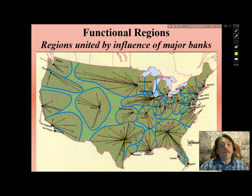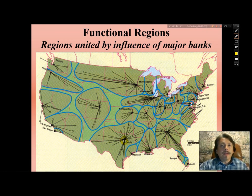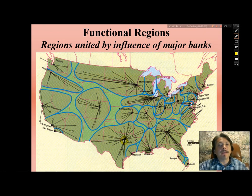For northern New Mexico — Albuquerque and Santa Fe — they are tied to the hub of Denver. Denver, Colorado has a network of banks stretching into Wyoming, Utah, and so forth. In this way, functional regions operate differently than formal regions such as the individual states of the United States.